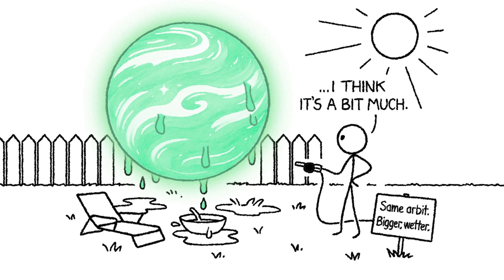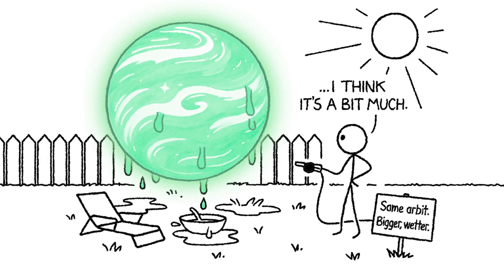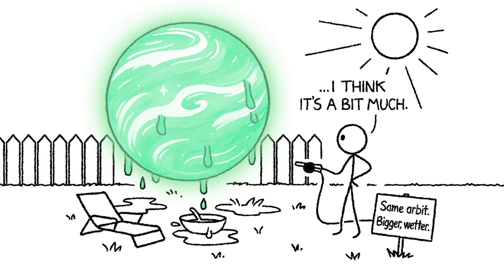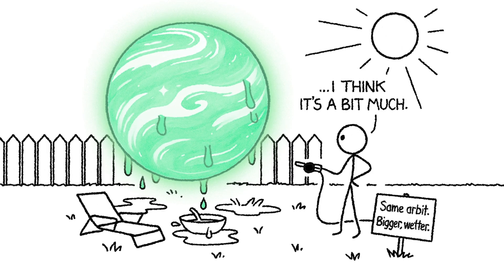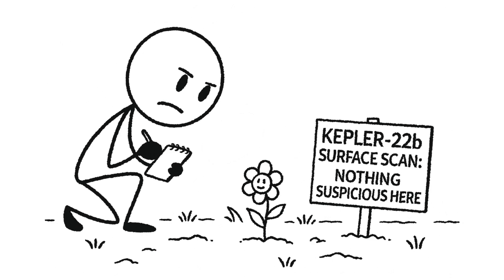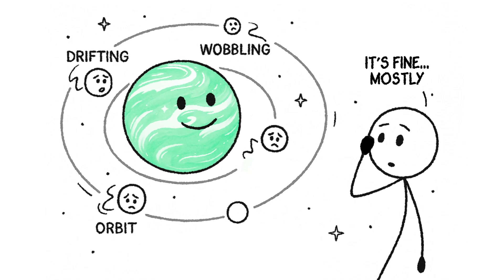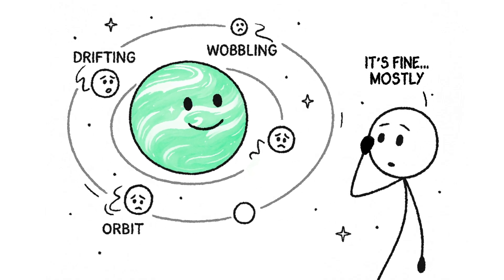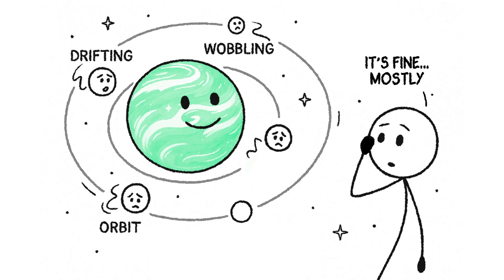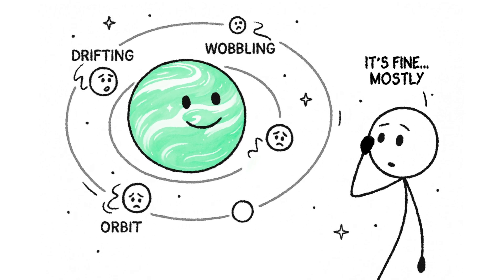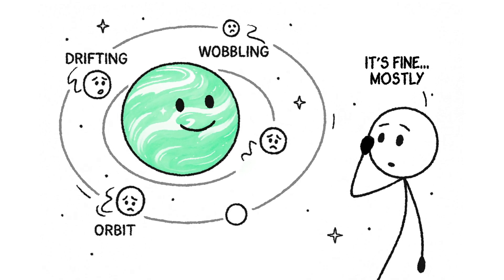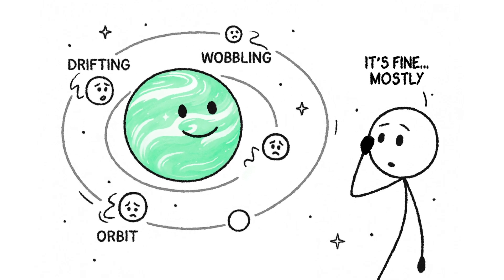So, what if we brought Kepler-22b into our own backyard? Same orbit, same sun, just a bigger, wetter version of Earth spinning where our planet used to be. The first thing that would change isn't the surface, it's the space around it. Kepler-22b's greater mass could cause a subtle shift in the gravitational balance of the solar system. Nearby planets and moons might drift, wobble, or get nudged into new orbits. But it wouldn't be catastrophic.